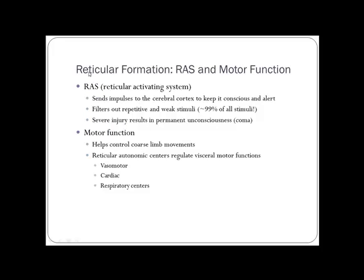The reticular activating system filters out all unnecessary information going to your brain. We have so many receptors taking in information, and this system removes weak, repetitive stimuli — like not feeling your socks until someone mentions them. If this system is injured, it's a major reason people go into a coma. It also has motor functions, helping with vasomotor control (blood vessel constriction and dilation), heart rate, and respiratory centers.